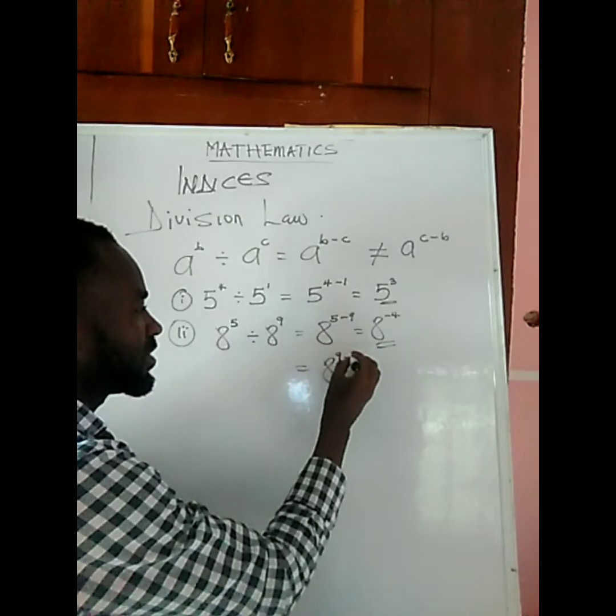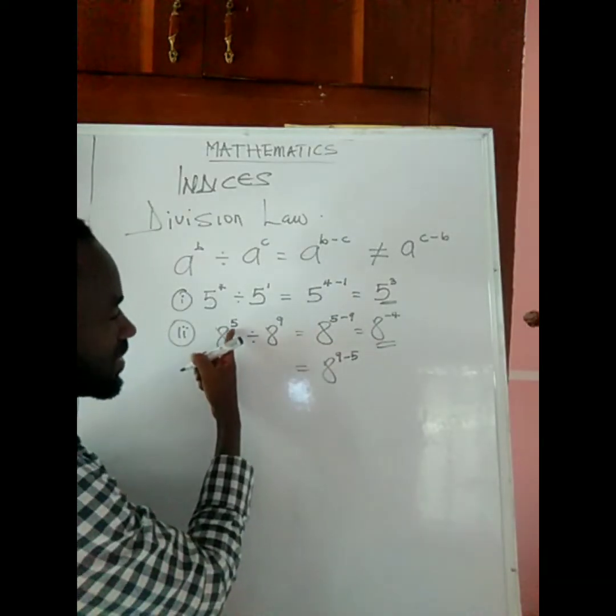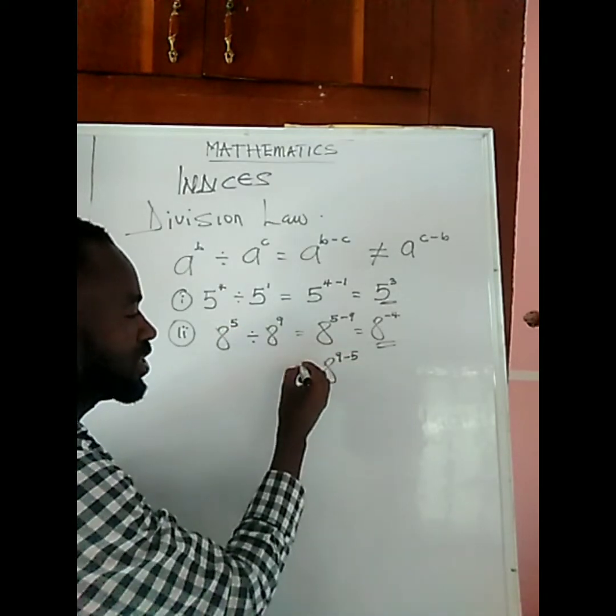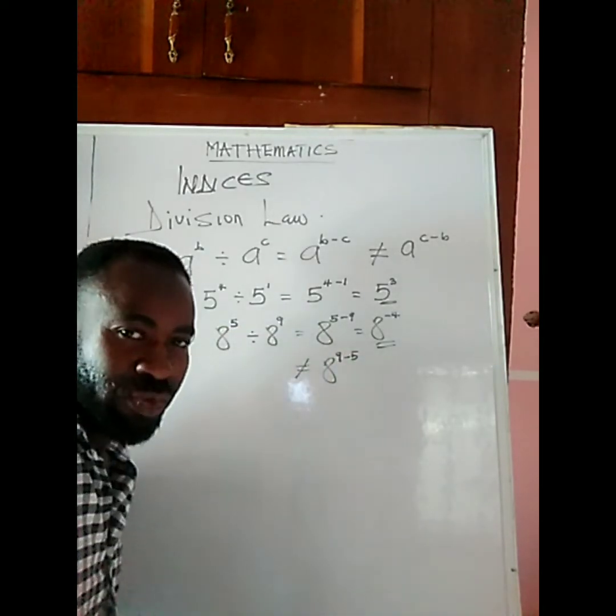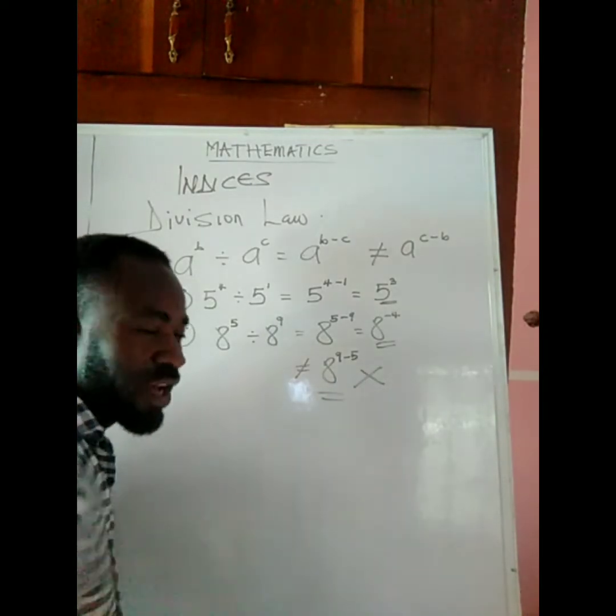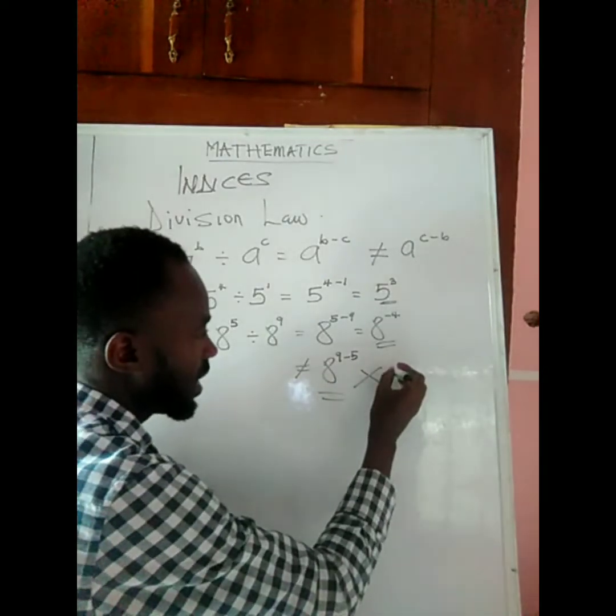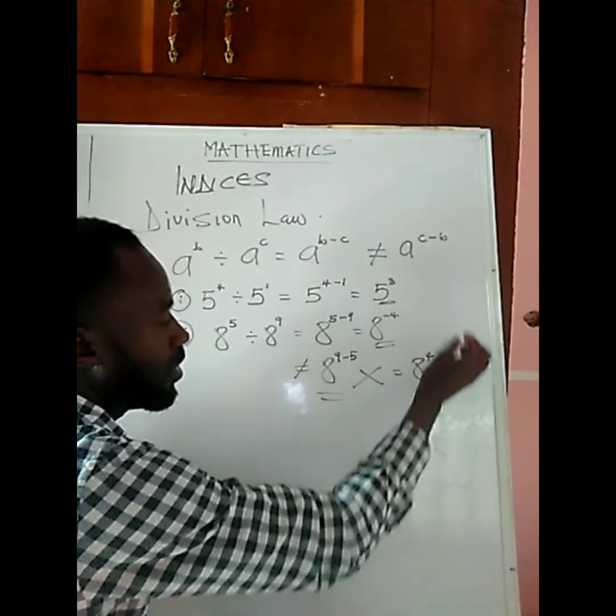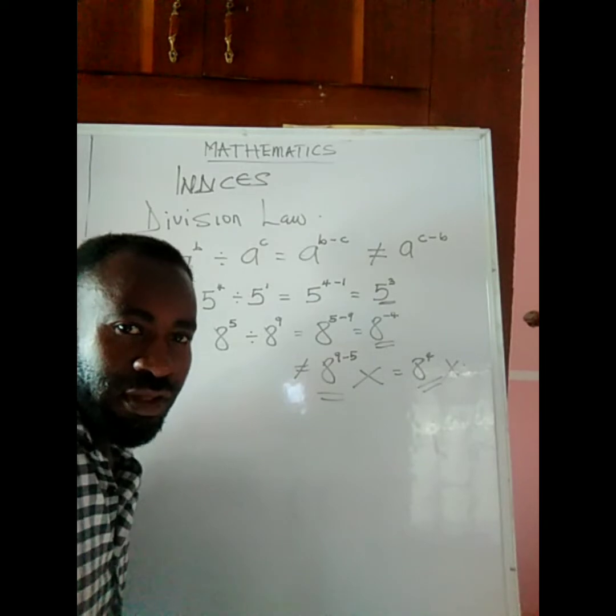Some students are tempted to reverse this solution, saying 8 to the power of 9 minus 5, because they see that 5 is smaller and tend to switch. Please don't do it this way. This is wrong, a wrong answer. The answer is not 8 to the power of 4, which is wrong.